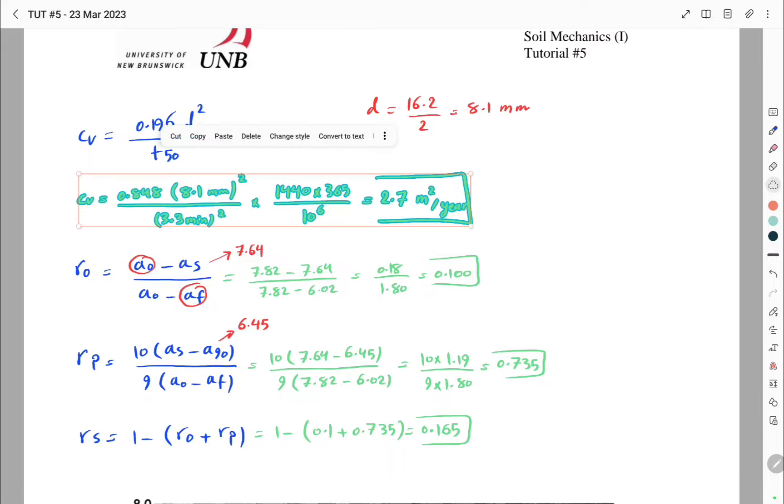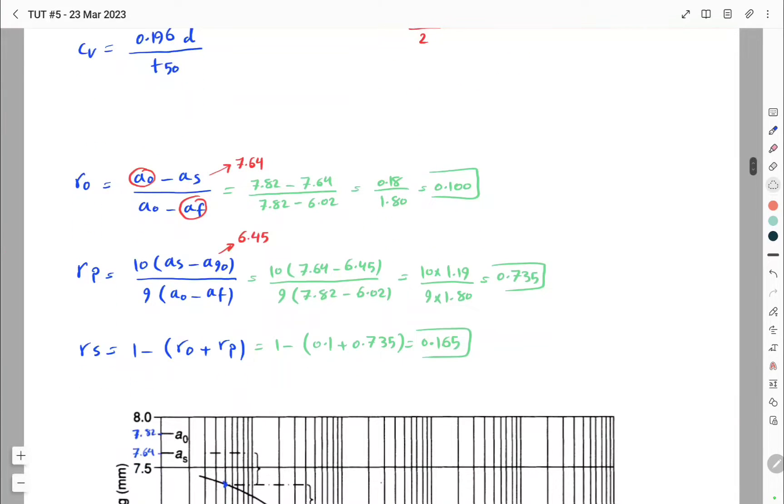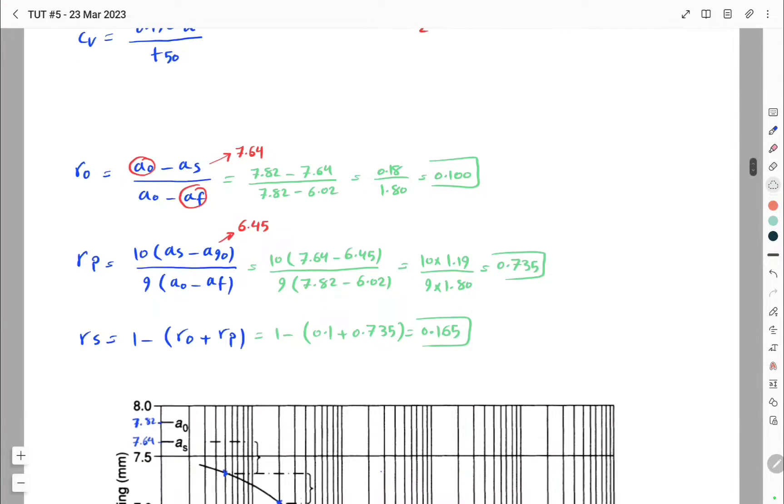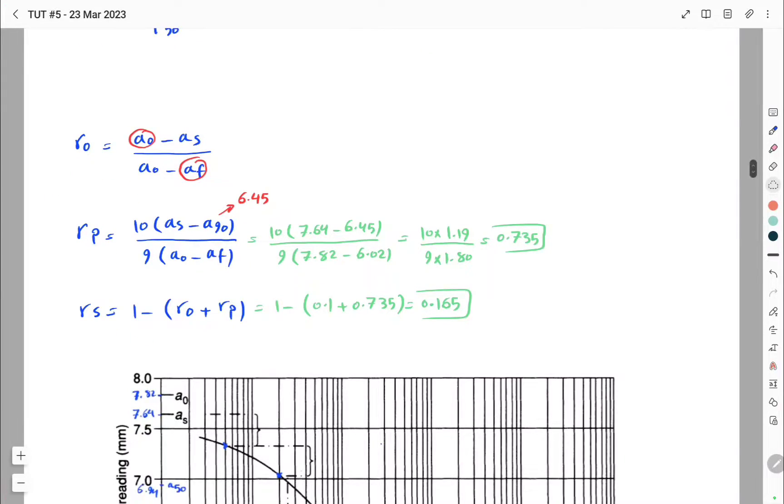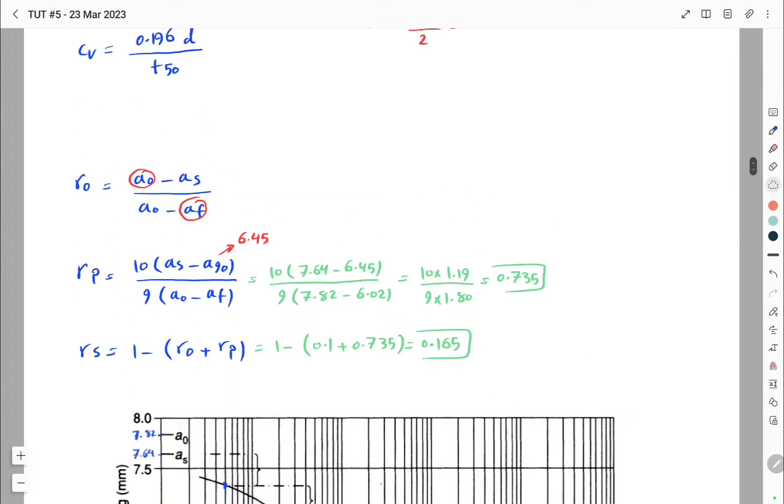d is the same, so again we have to divide the thickness of our layer by 2. The value of R0 is a0 minus AS divided by a0 minus AF, so again it's the same.